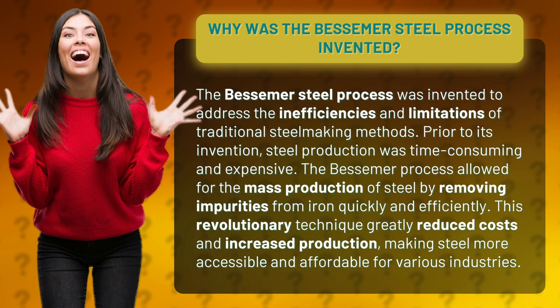The Bessemer Process allowed for the mass production of steel by removing impurities from iron quickly and efficiently. This revolutionary technique greatly reduced costs and increased production, making steel more accessible and affordable for various industries.